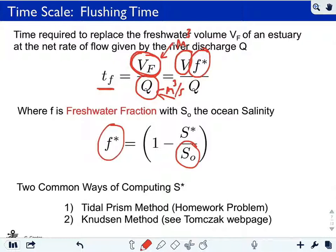So S0 is some kind of characteristic offshore salinity, and F star is defined as this. You can see that S star is the characterization of the salinity within the estuary. If the salinity within the estuary is all fresh, S star would be zero and F star would be one, meaning it is fully fresh, or the fresh water fraction is one.